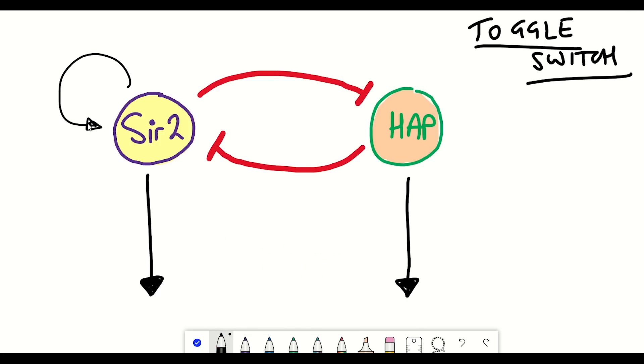Increased activity of SIR2 represses HAP so that HAP can no longer repress SIR2, so SIR2 increases. Conversely if we increase HAP that represses SIR2, and so the repression of HAP declines and therefore HAP increases. So they're both self-reinforcing pathways.